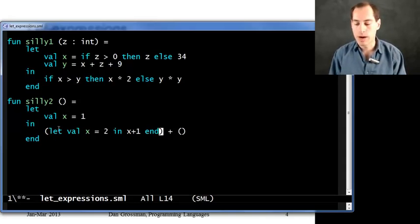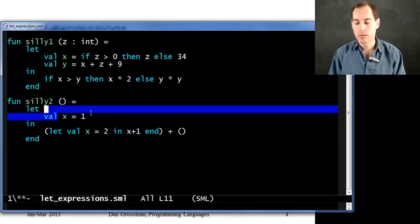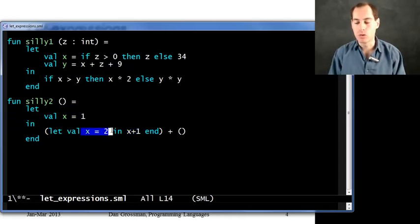How's that going to work? Well, I'm going to be in an environment where x is bound to one. But then when I evaluate this, I'll create an inner environment where this x shadows the outer x. So, x will be two when I go to evaluate this body.